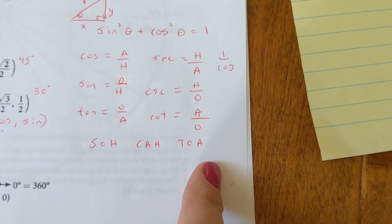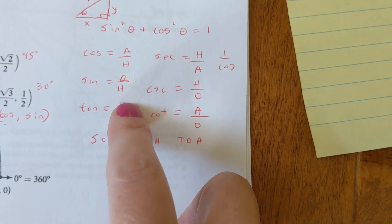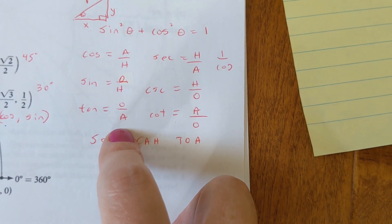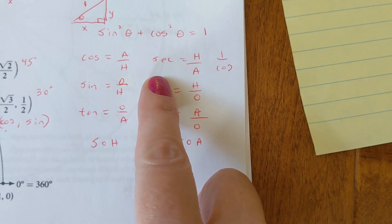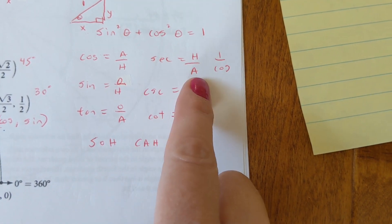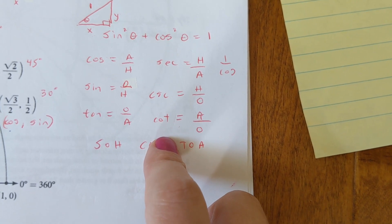SOHCAHTOA, cosine adjacent over hypotenuse, sine's opposite over hypotenuse, tangent's opposite over adjacent. And then secant is the inverse of cosine, so you flip it over. Same with cosecant and cotangent.